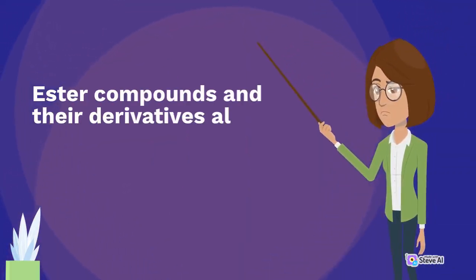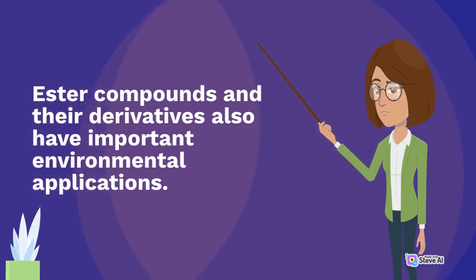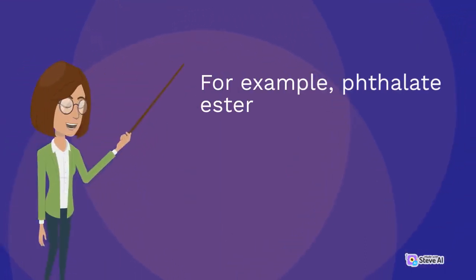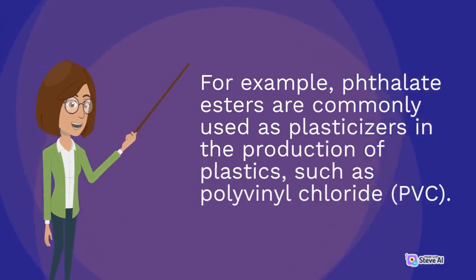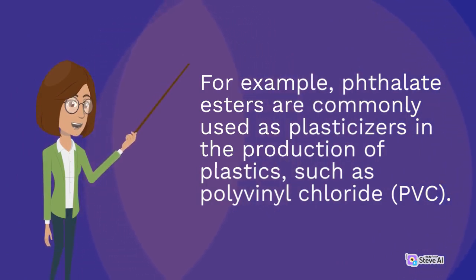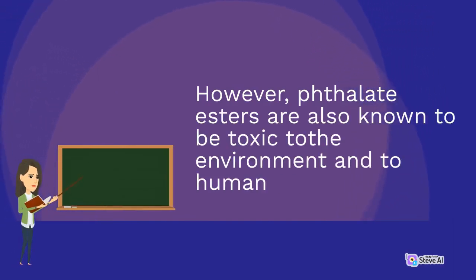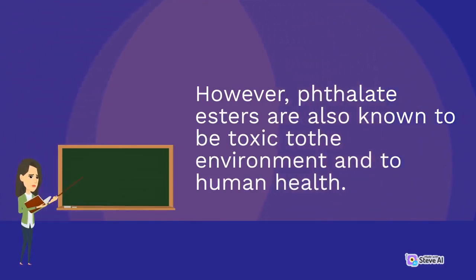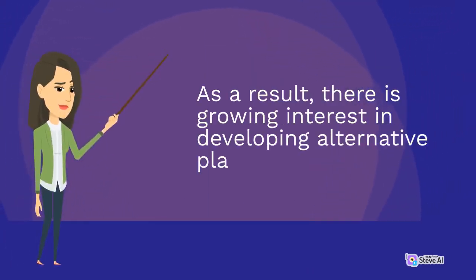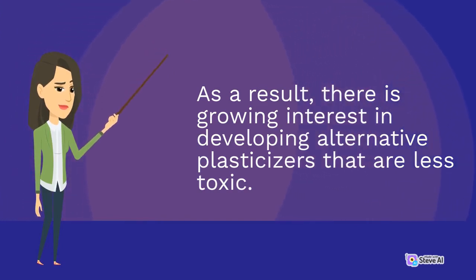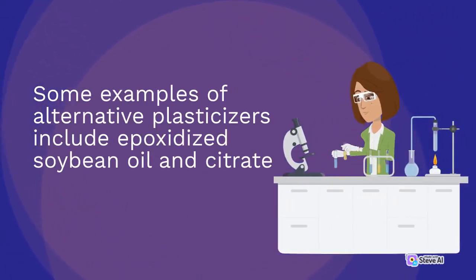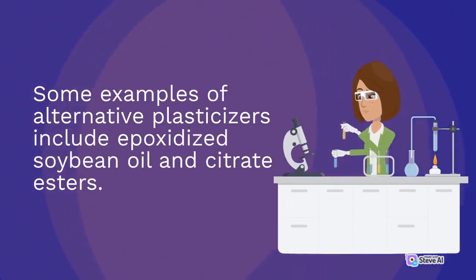Ester compounds and their derivatives also have important environmental applications. For example, phthalate esters are commonly used as plasticizers in the production of plastics, such as polyvinyl chloride (PVC). However, phthalate esters are also known to be toxic to the environment and to human health. As a result, there is growing interest in developing alternative plasticizers that are less toxic. Some examples of alternative plasticizers include epoxidized soybean oil and citrate esters.